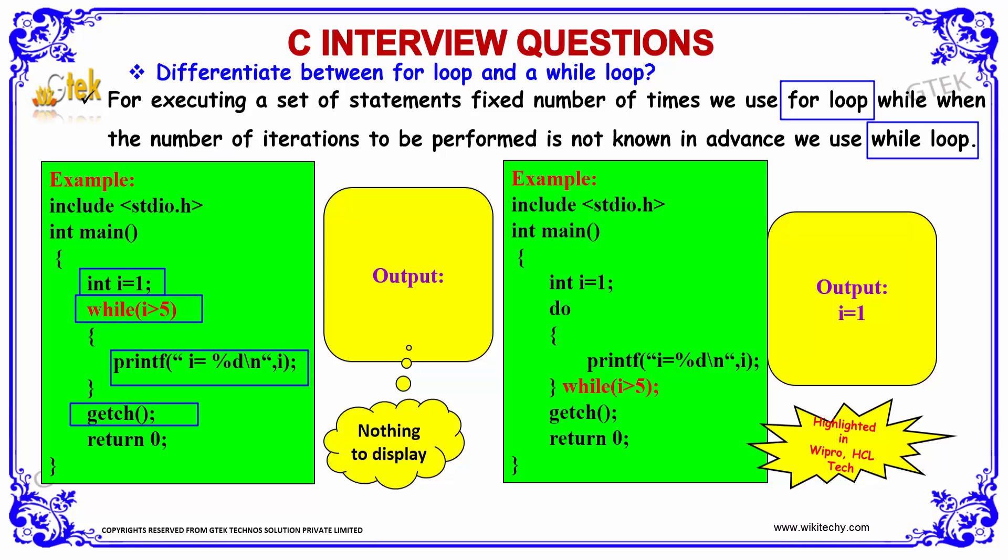it's not right. So, even in terms of the printf logic, i equal to %d slash n comma i, since the condition is not satisfied, we won't be getting any kind of output for this program.